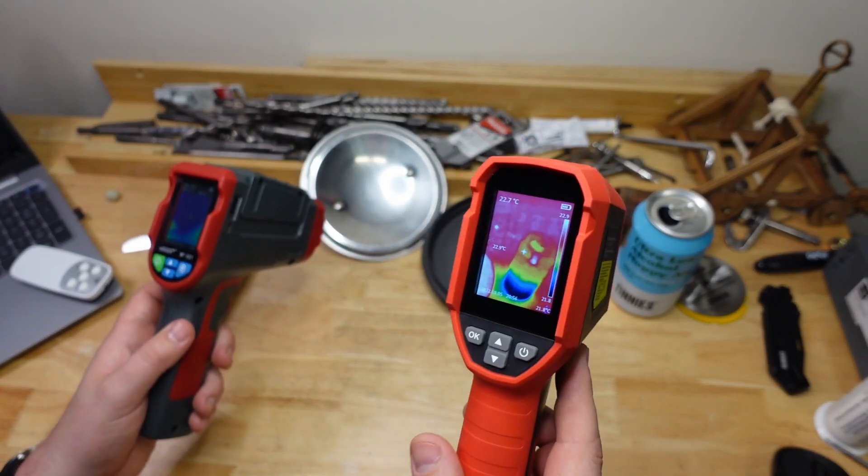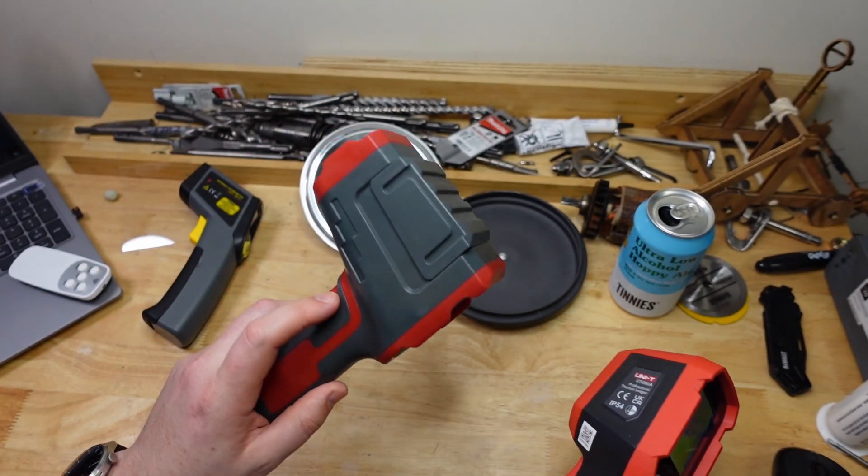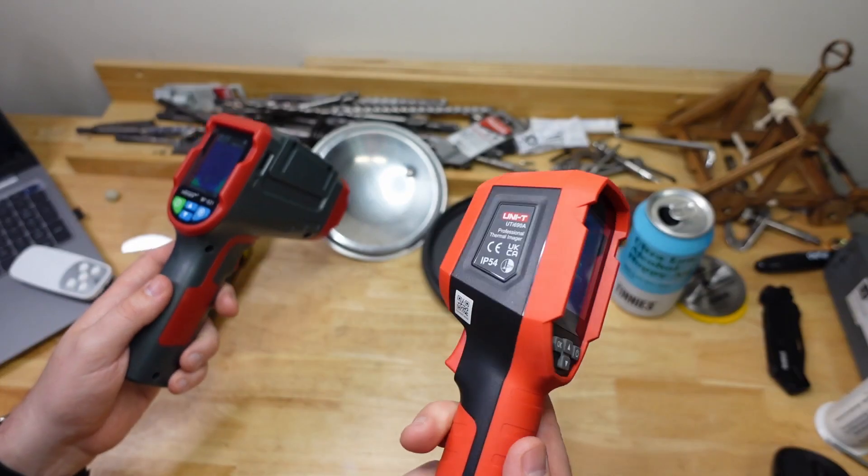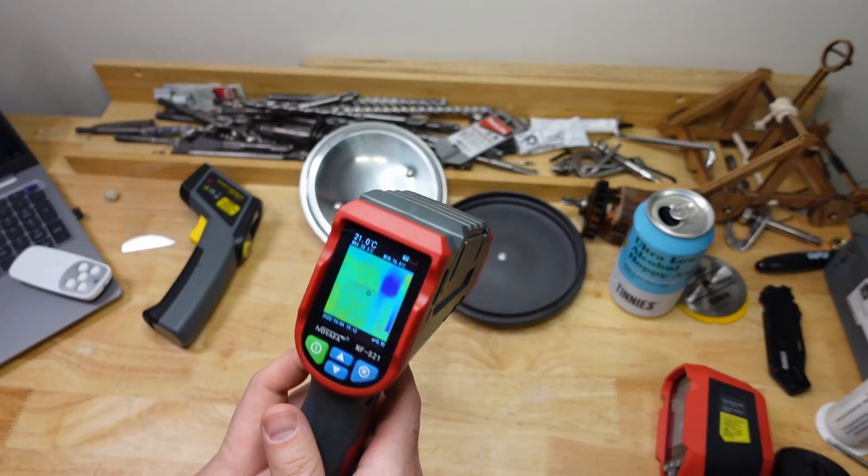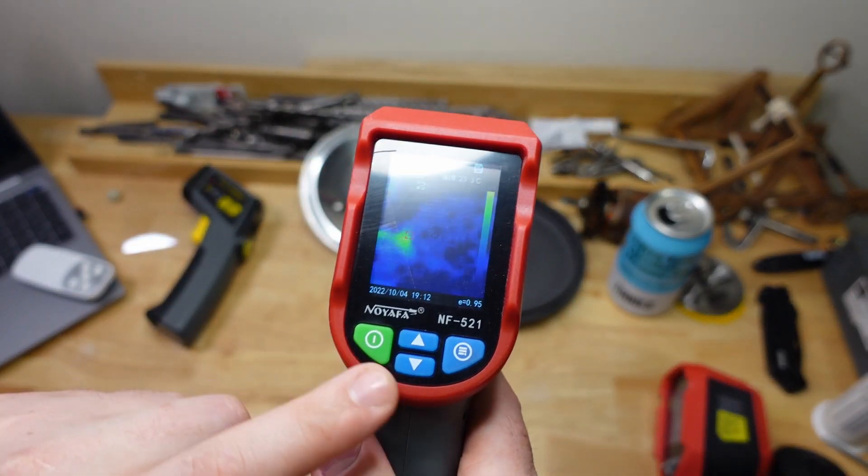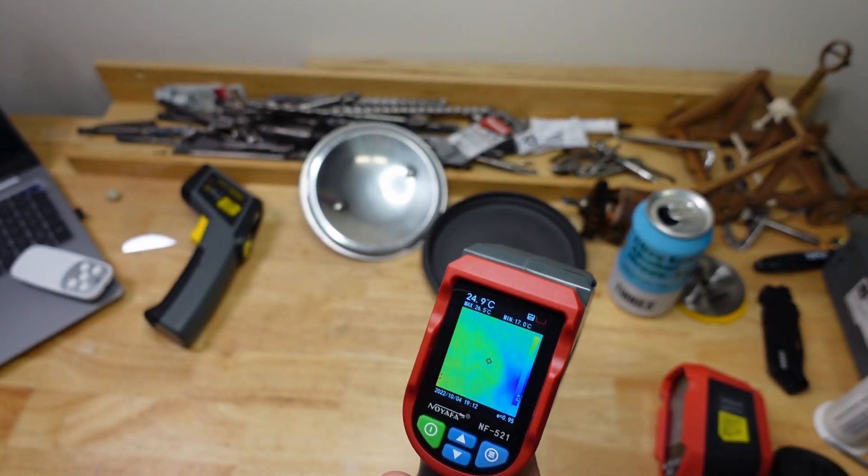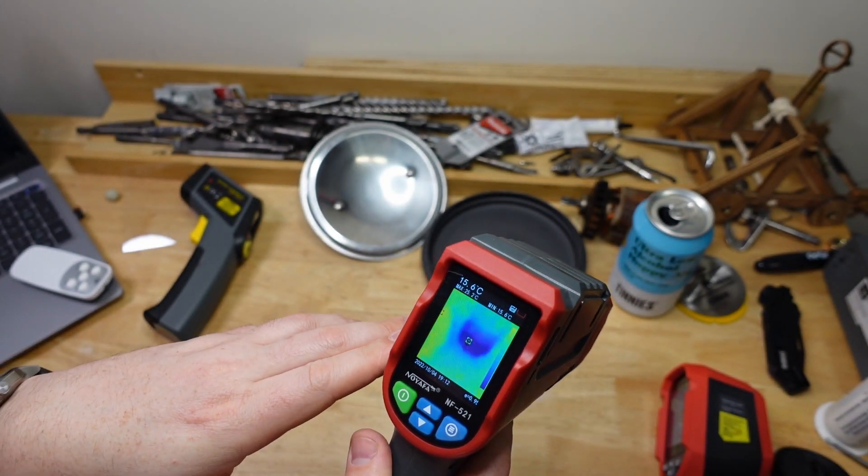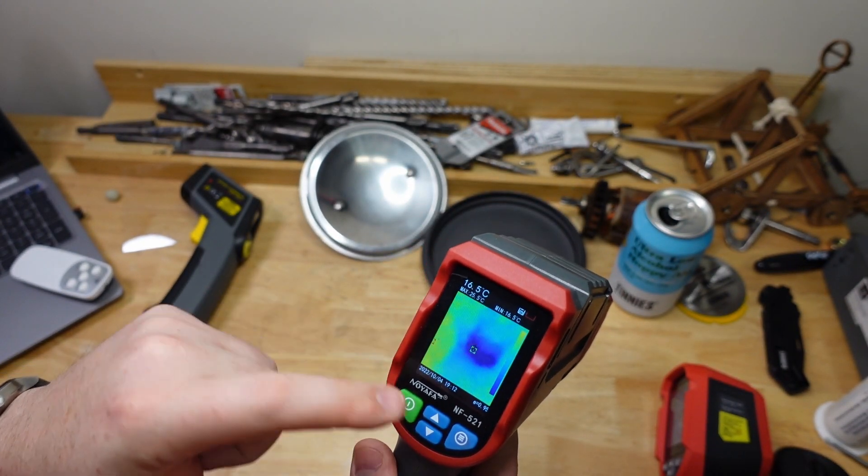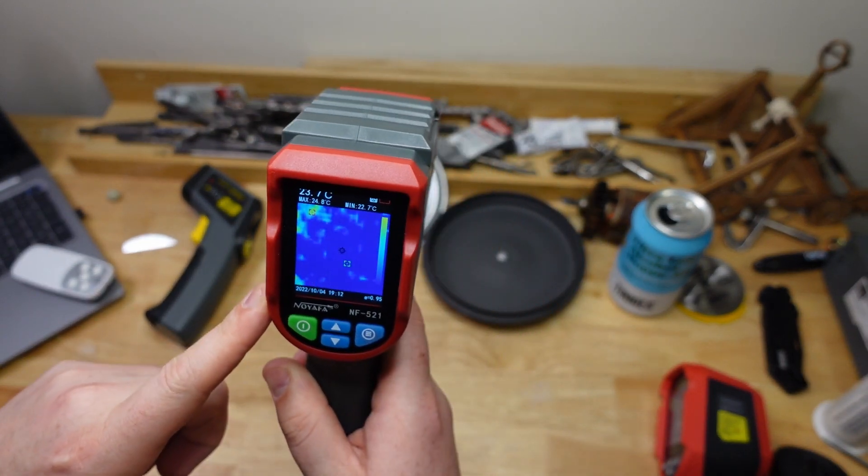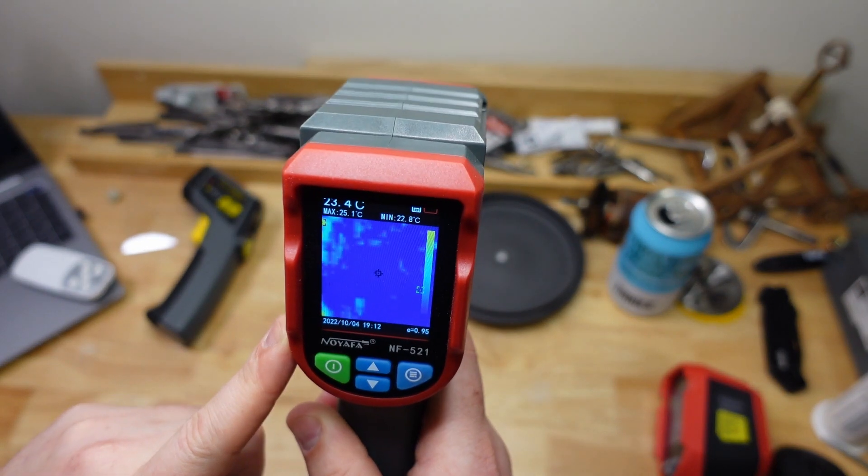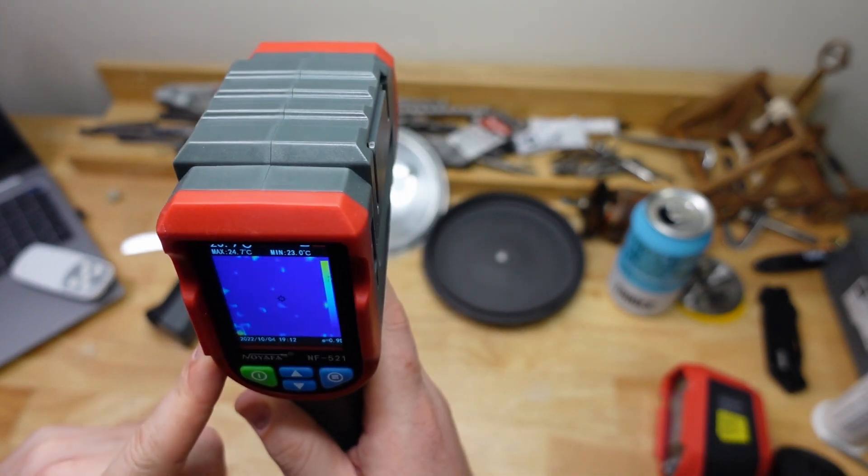Now, I actually like thermal imaging so much that I actually just hated my first one and decided to buy a new one, which is a bit better. My first one was this No Fire NF521. And basically, I just really hated it because it has this auto-ranging where you can't actually just see anything. See how it just goes to static?